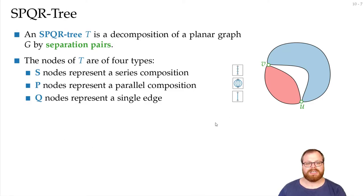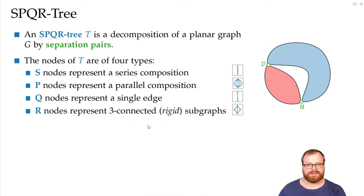And now additionally we have so-called R nodes. An R node is a rigid subgraph, that's a three connected subgraph. Here we have a bunch of separation pairs, between all pairs of these vertices, and some components in between.